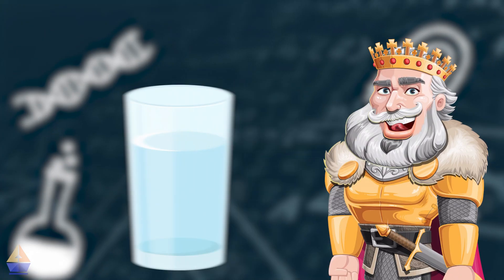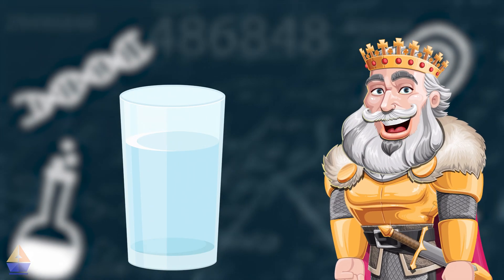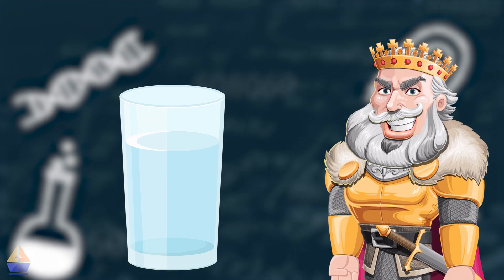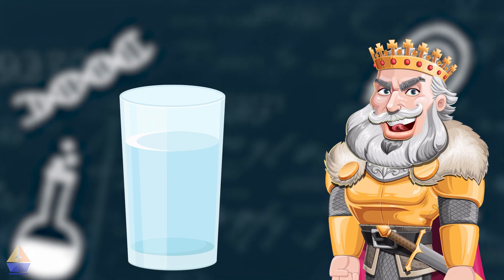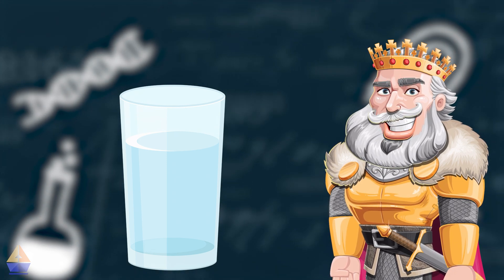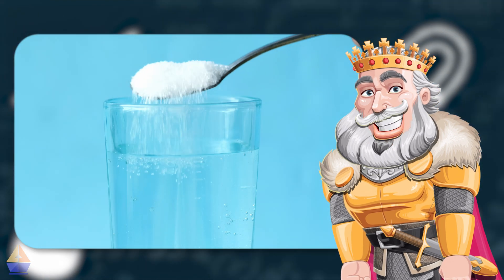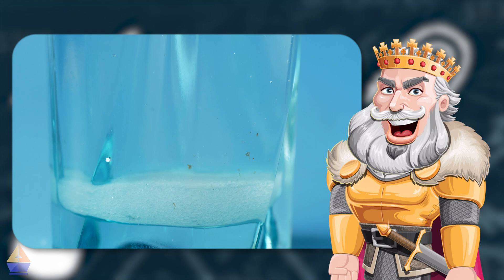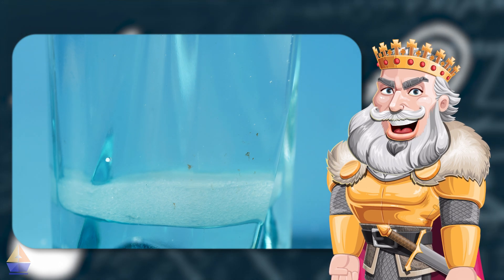Step 1: Hold up your glass of water. It looks clear, doesn't it? But we're about to mix in something that will help us see those tiny particles. Step 2: Add one teaspoon of sugar into the water. Don't stir just yet. Watch what happens to the sugar as it sinks to the bottom.